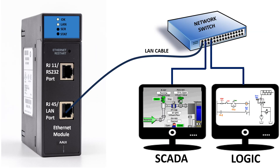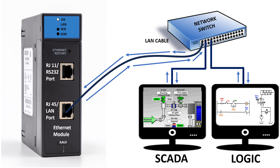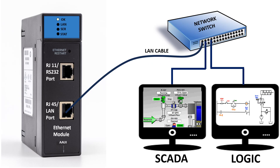The LAN LED represents the LAN port. It will be solid green when network connectivity is successfully established with the connected system. If it starts blinking, the module has active data traffic — meaning data is being sent and received. If the LAN LED is off, it indicates no physical link, possibly due to a faulty Ethernet cable or faulty network switch.